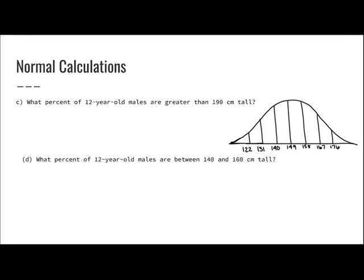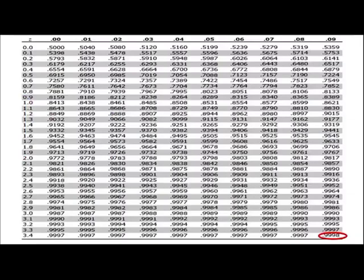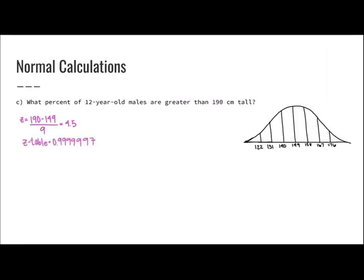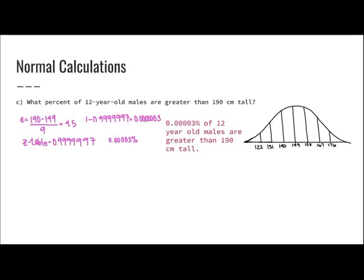What percent of 12-year-old males are greater than 190 centimeters tall? On the normal curve, 176 is already three standard deviations from the mean, so this percentage will be very small. Z-score: (190 minus 149) divided by 9 equals 4.5. From the Z-table, 3.4 gives 0.9998; using a higher Z-table gives 0.9999997. Subtracting from 1 gives 0.0000003, so only about 0.00003% of 12-year-old males are greater than 190 centimeters tall.